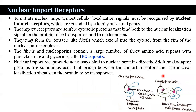Nuclear import receptors do not always bind to the nuclear protein directly. The nuclear import receptor binds both to nucleoporins and to a nuclear localization signal on the cargo proteins to be transported. In some cases, additional adapter proteins are used to bridge between import receptors and the nuclear localization signals on the proteins to be transported.